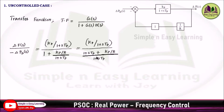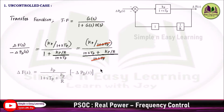Taking LCM in the denominator and multiplying (1 plus STP) with 1, we get a simplified expression. You can cancel the (1 plus STP) terms, so the equation is further reduced. Bringing minus del PD(s) to the right-hand side gives us the transfer function.